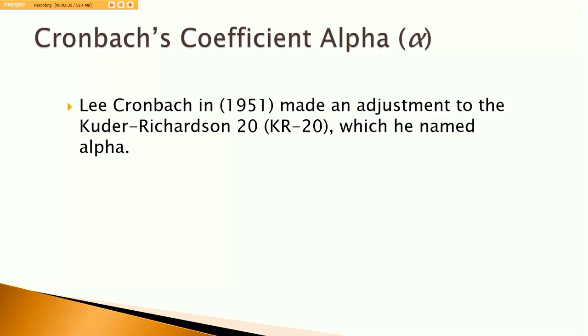So the KR-20 is the average of all possible split half combinations for scales that have dichotomous anchor definitions. In other words, where respondents to the test have two choices. So they could say it's either true or false, yes or no, correct or incorrect, and so on and so forth. So that's the KR-20, all possible split half combinations to dichotomously scaled items.